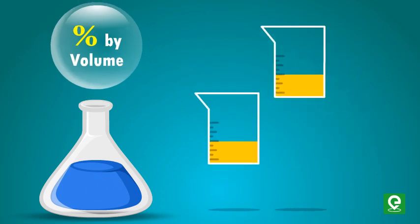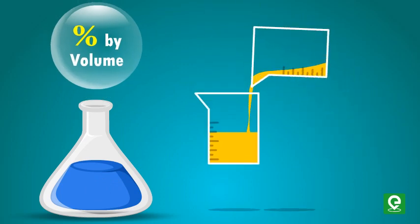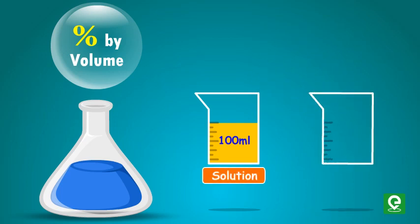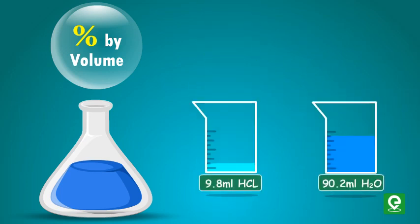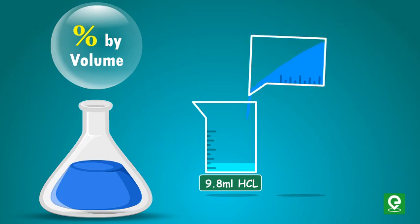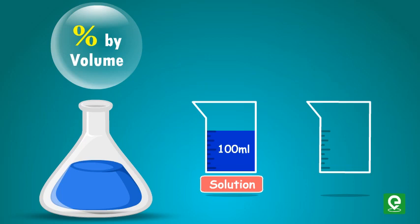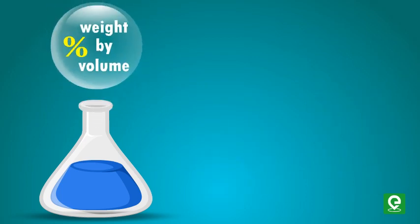Percent by volume: similarly, adding certain volume of solute per hundred milliliter of solution is expressed as percentage by volume. For example, 9.8 percent of HCl by volume means that 100 milliliter of solution contains 9.8 milliliter of HCl.